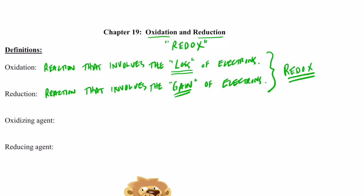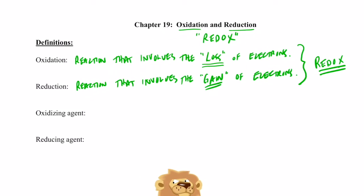One does not occur without the other. In order for something to gain electrons, something else has to lose them. Now, it's easy to get these two terms confused. It happens all the time. I mean, after all, think about it. Reduction is gaining? That seems contradictory to me. How could reduction be gaining?